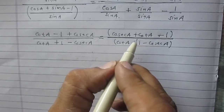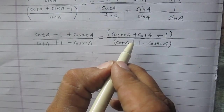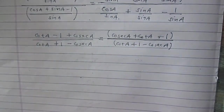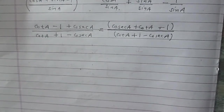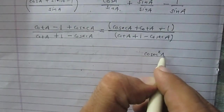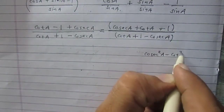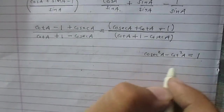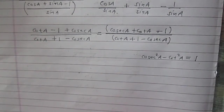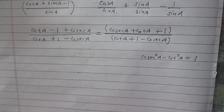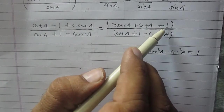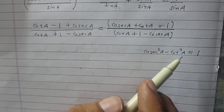Now observe the numerator. There are three terms: cotA, cosecA, and 1. Do you know any relationship between cotA, cosecA, and 1? Yes — the trigonometric identity is cosec²A minus cot²A equals 1. So we can use this identity by writing 1 as cosec²A minus cot²A.